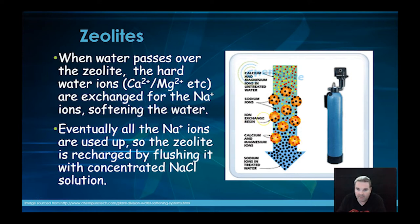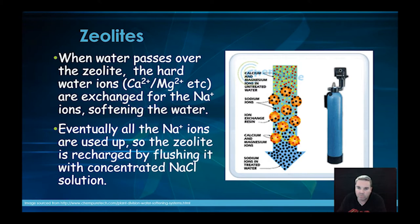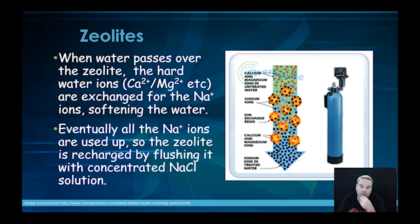This is basically ion exchange chromatography, similar to what we looked at in the first topic. We're exchanging the sodium ions on the surface for the calcium and magnesium ions in the water. The output water contains only sodium ions — it's much softer water and won't form scum with soap when used.